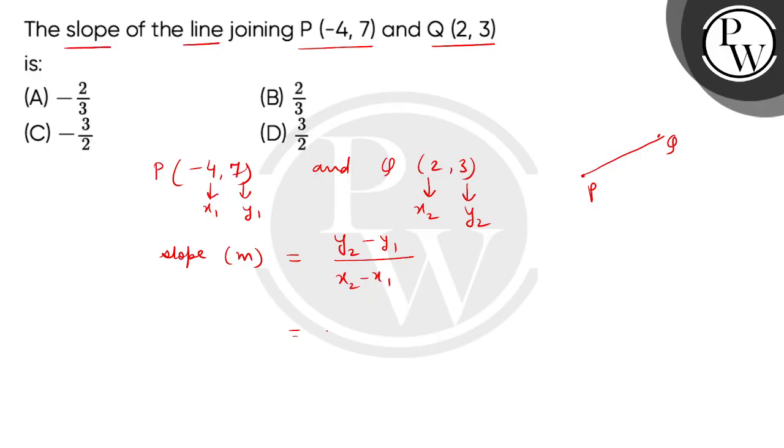So children, we will put values here. We will put Y2 is 3, Y1 is 7 divided by X2 is 2 and X1's value is (-4).